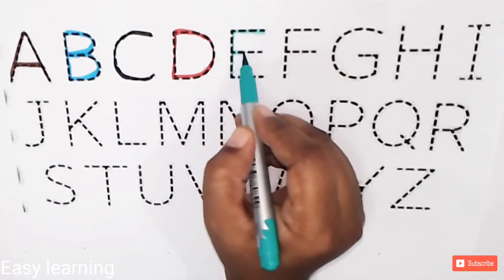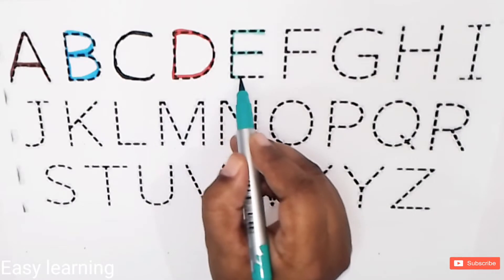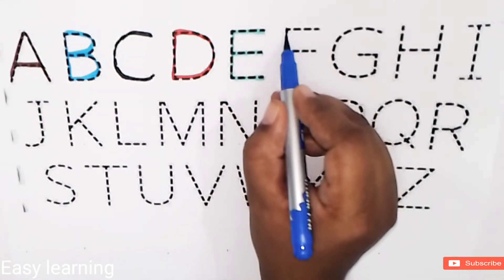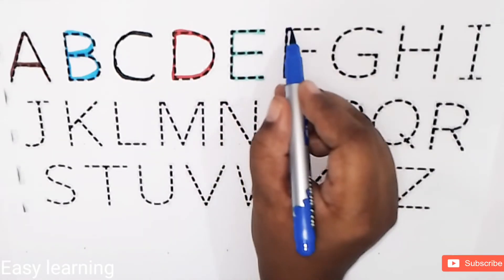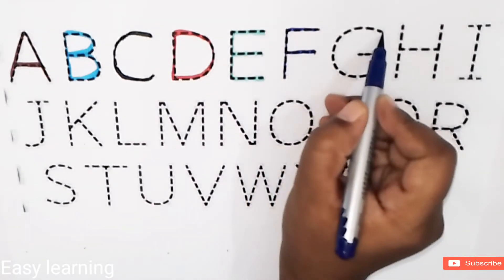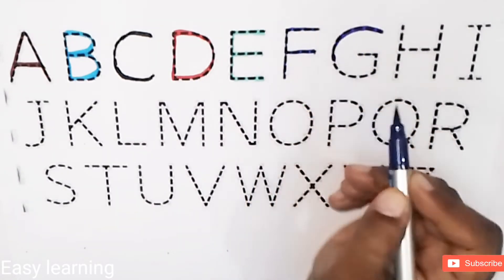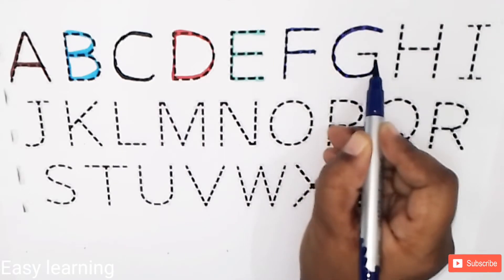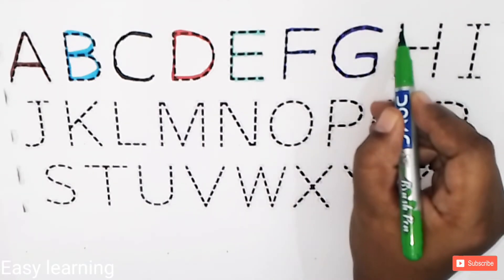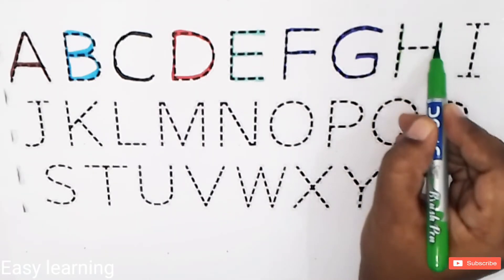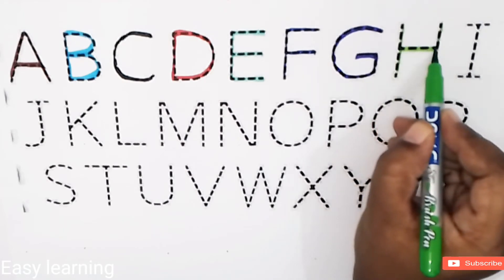E, E for engine. F, F for frog. G, G for gun. H, H for helicopter.